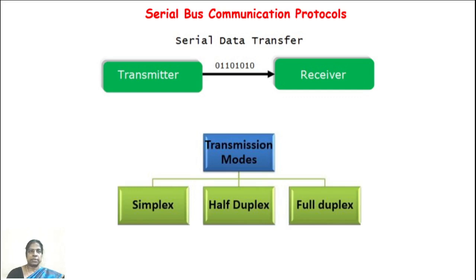The transmission mode describes the direction of signal flow between two connected devices. In simplex mode, communication is unidirectional. In half duplex mode, communication is two-way but the channel is used alternatively by the two connected devices. In full duplex mode, communication is bi-directional and the channel is used simultaneously by both connected devices.